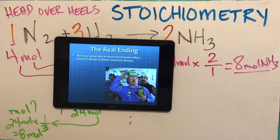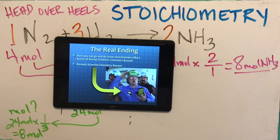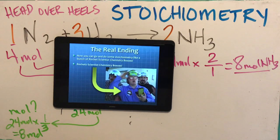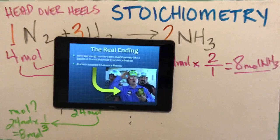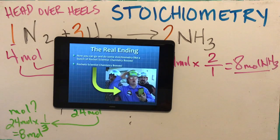Now you can go do some stoichiometry like a bunch of rocket scientist chemistry bosses. I hope everything made sense. I'm going to put a simple worksheet on the D2L site for today — give it a try. Very simple, whether you want to do it the old fashioned way or the head over heels way, either way is acceptable. Thank you very much. I hope it made sense — if there are any comments, questions, or concerns, throw them in the comment section of this YouTube video or reach out through Edsby and I'll get back to you as soon as possible. Talk to you later, bye bye.